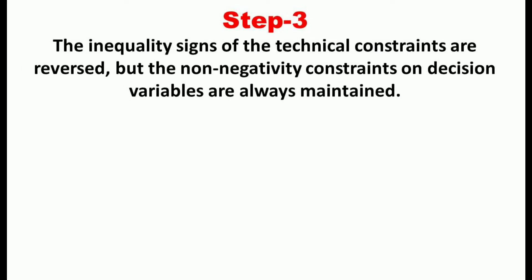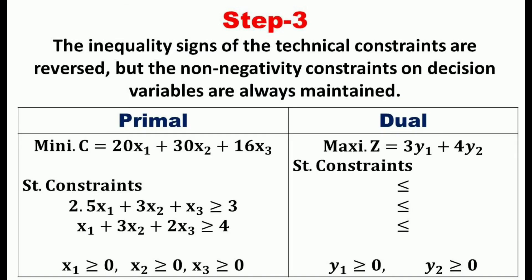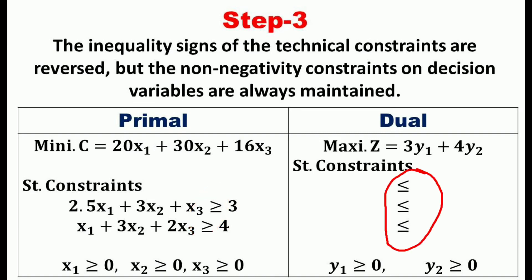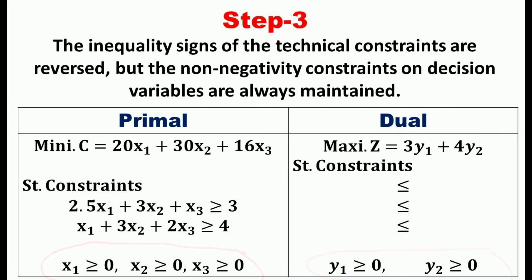The third step is that the inequality signs of the technical constraints are reversed, and the non-negativity constraints on the decision variables are always maintained. In our example, the inequality signs in the primal are ≥, so in the dual they are changed to ≤. We have three ≤ constraints in the dual because there are three decision variables in the primal. Just as x1, x2, x3 ≥ 0 in the primal, the variables y1 and y2 are also ≥ 0 in the dual.